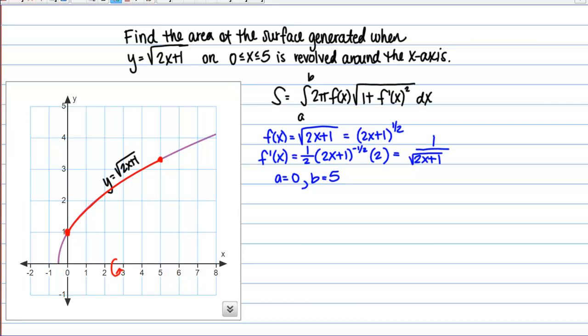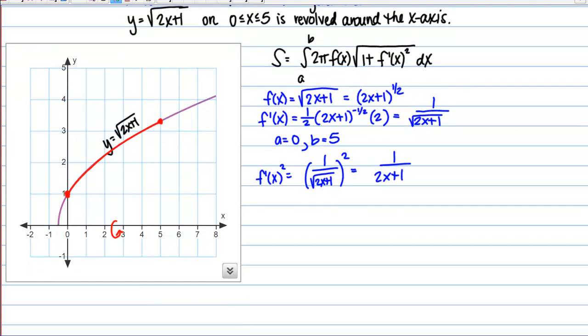Okay, so maybe one more thing before we actually plug into our integral. We're going to want to know f prime of x squared. So let's go ahead and square that derivative and see what we get. So I have my derivative here and I'm going to square it. So if I do that I'm going to get 1 over 2x plus 1. So then if I go back to my integral I've got the integral from 0 to 5 and actually let's go ahead and pull that 2 pi out front just to make things a little nicer. Then I've got f of x so that was the square root of 2x plus 1 times the square root of 1 plus my derivative squared which is this expression here, 1 over 2x plus 1. And we're going to integrate with respect to x.